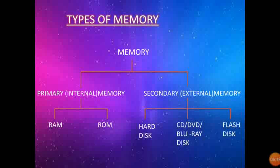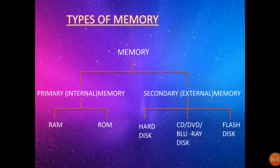The next topic is Types of Memory. There are two types of memory: primary memory and secondary memory. Primary memory is also called internal memory, and secondary memory is also called external memory. In primary memory, two examples are RAM and ROM. In secondary memory, examples include hard disk, CD, DVD, Blu-ray disk, and flash disk — these are the names of storage devices.